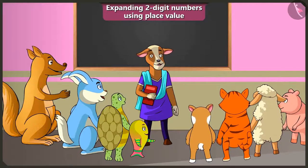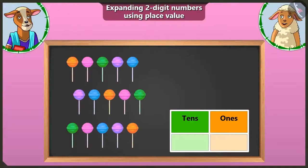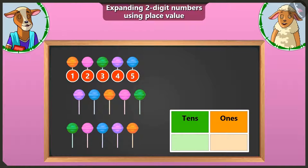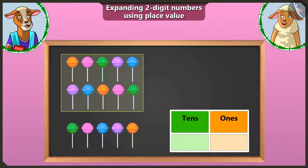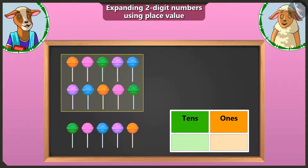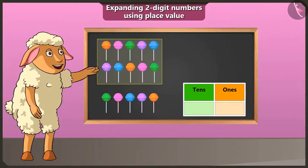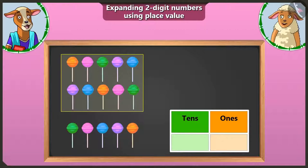I will show you another way of writing it. Here is a lollipop. Let us make a bundle of 10: 1, 2, 3, 4, 5, 6, 7, 8, 9 and 10. This is a group of 10 lollipops. We have one group of 10 lollipops, so we will write one in the box of tens.